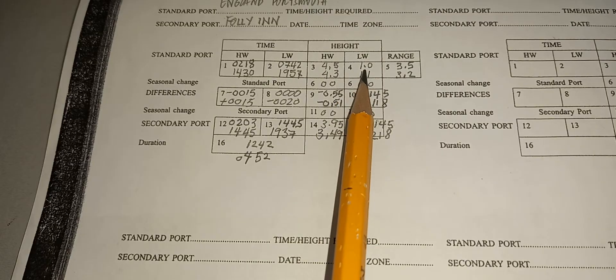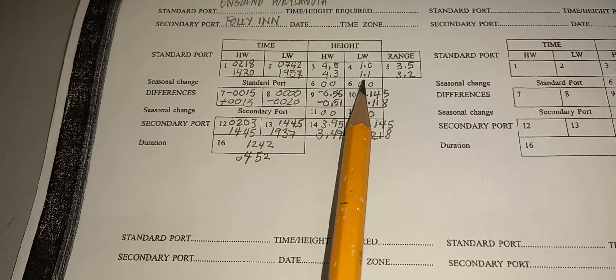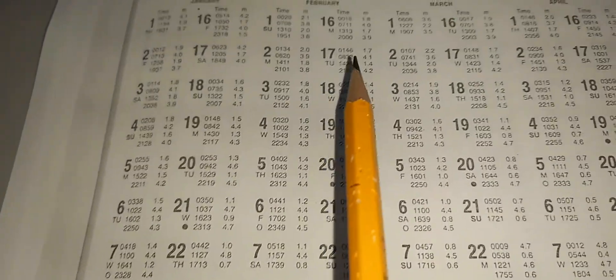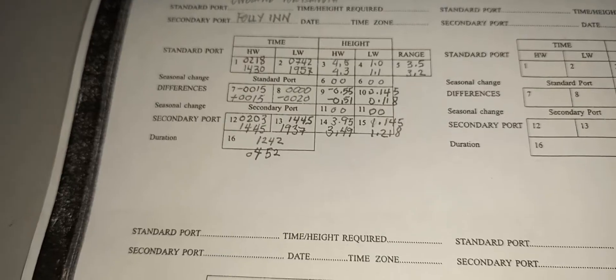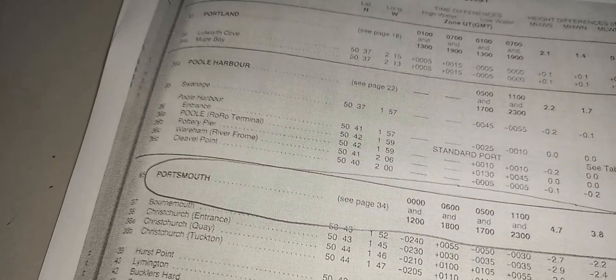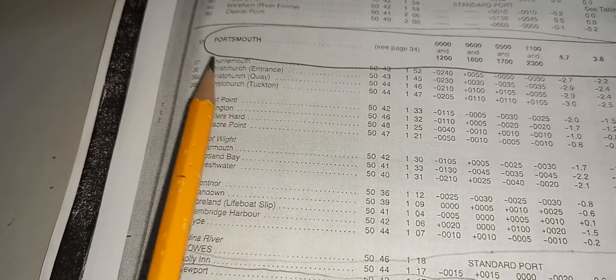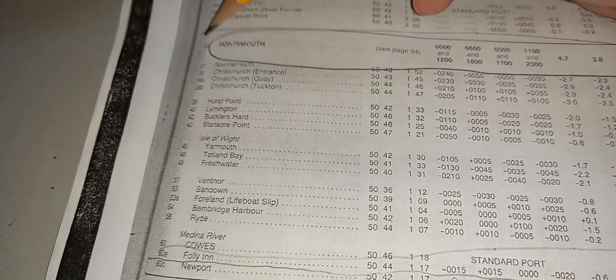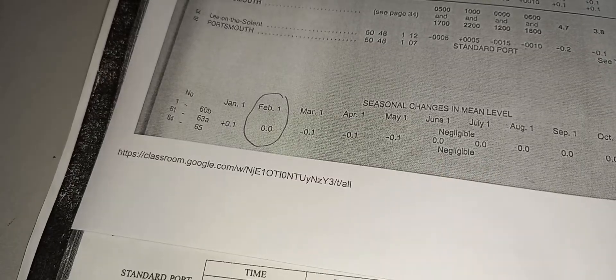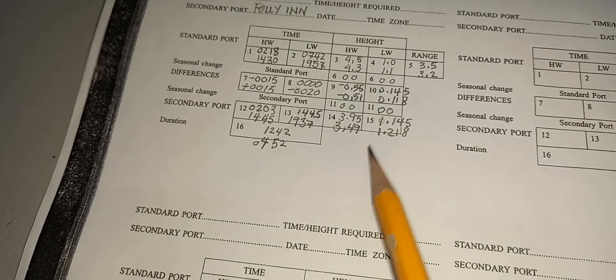Now to get the standard port seasonal change — the date is February, so you need to go to Part 2 of the secondary port. For Port Smoke, this is number 65. It indicates negligible, so you put 0. Both seasonal change values are 0.